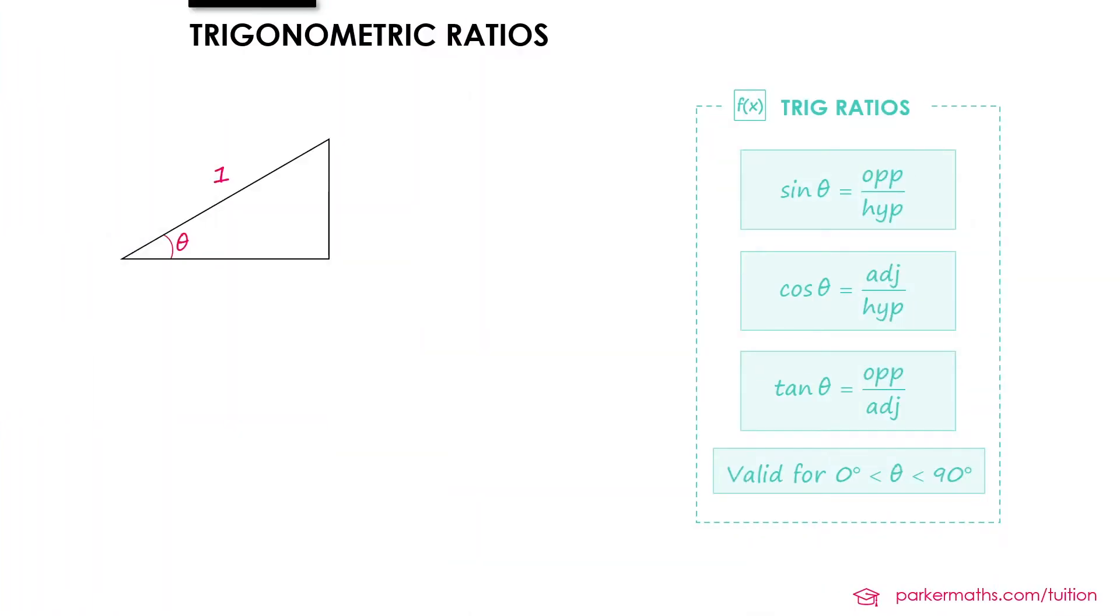Before we do anything with the unit circle I'd first like to look at a right-angled triangle with a hypotenuse of length 1. We'll label the base of the triangle X and the height of the triangle Y, and we can find the values of X and Y using basic trigonometry.